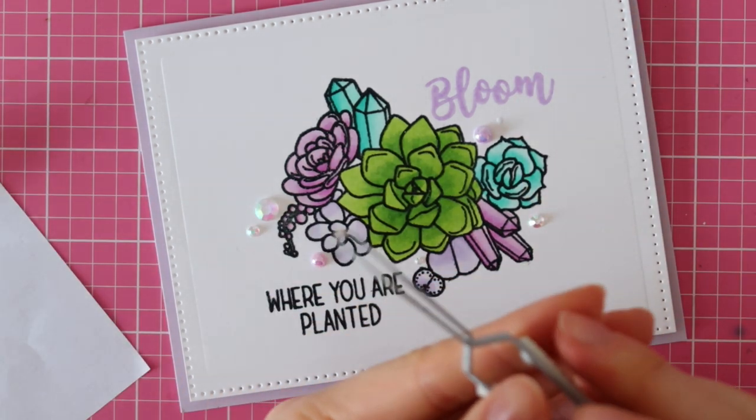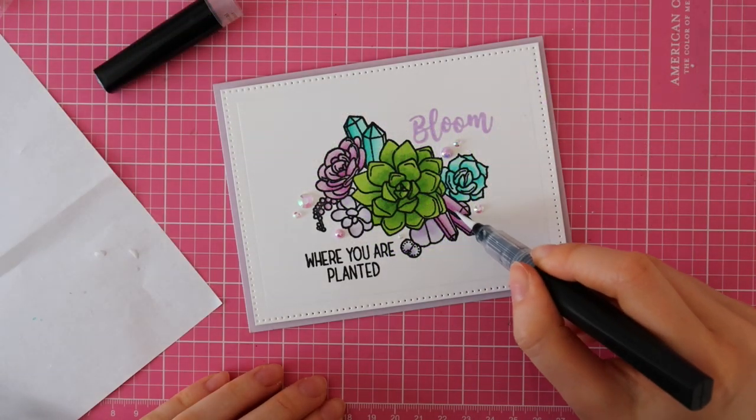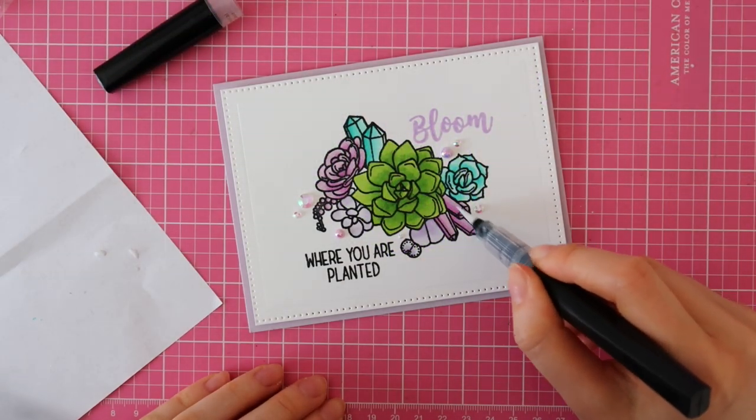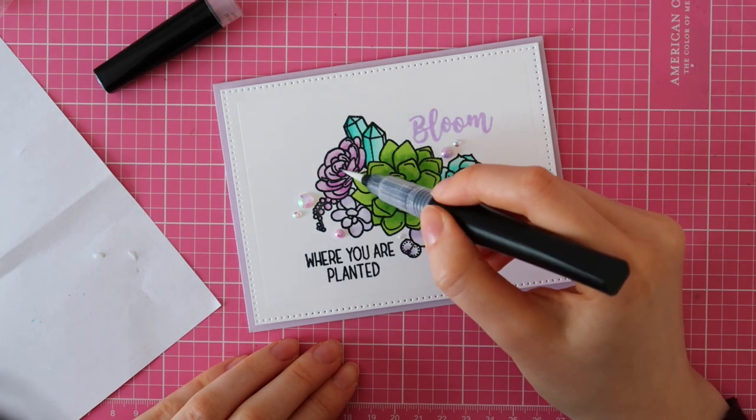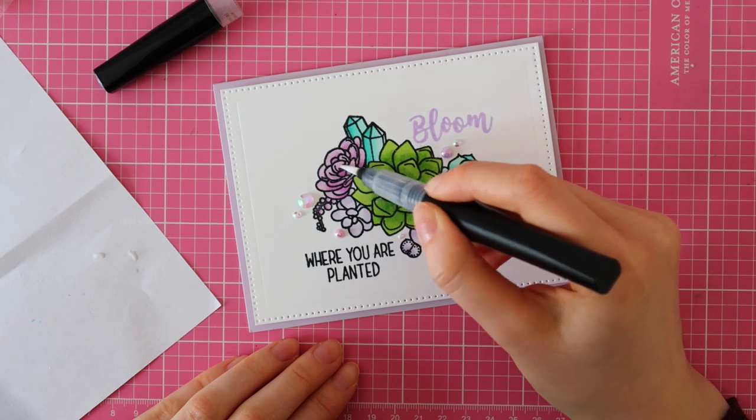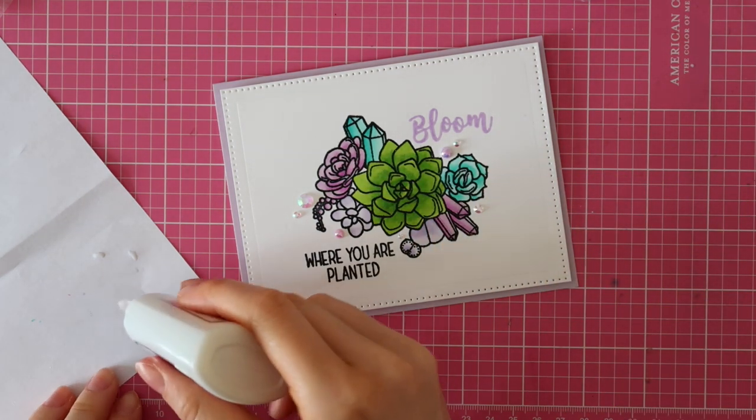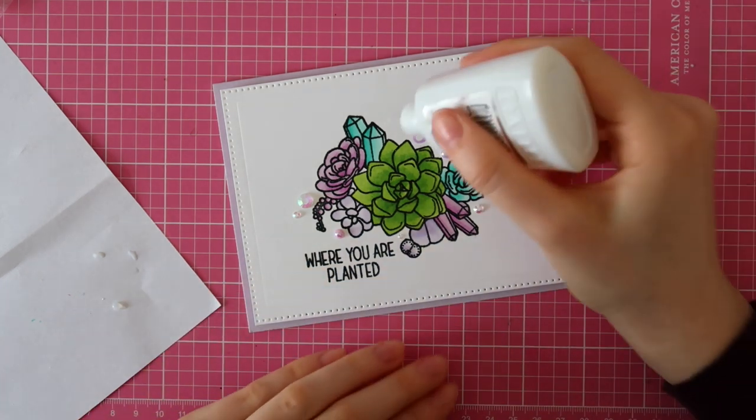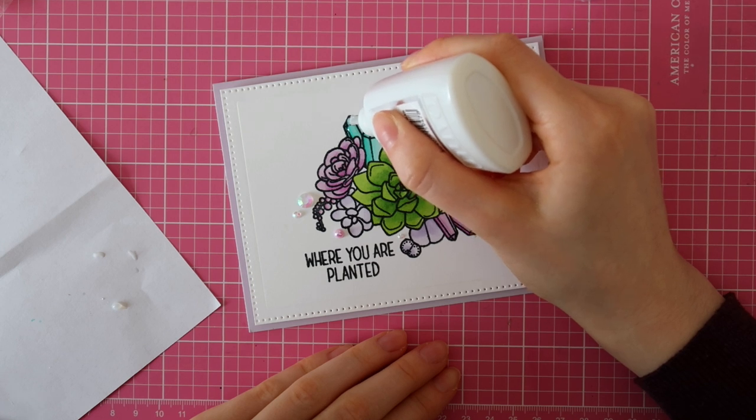Okay, so now that I adhered these beautiful and super sparkly crystals, it's time to add even more shimmer. Here I am using a Spectrum Noir clear gloss shimmer pen to add some sparkle to these succulents. And finally, I'm adding a coat of Tonic Nouveau Crystal Glaze for some extra shine and dimension.